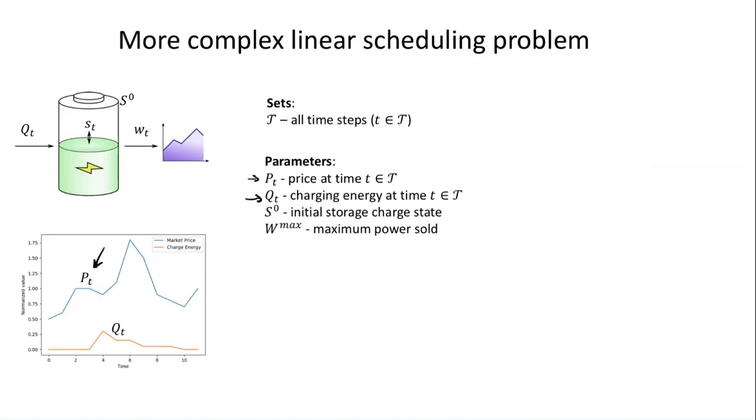Likewise, for our heat addition, we have Q_t. We define these by saying it's a price at any time t, where t is in the set—this notation means 'in the set of T' that we've defined before. That's the first flavor of parameter.